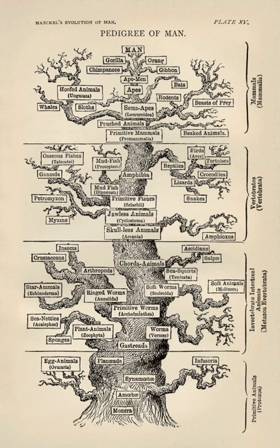A third way is by approach, such as field biology, theoretical biology, experimental evolution, and paleontology. These alternative ways of dividing up the subject can be combined with evolutionary biology to create subfields like evolutionary ecology and evolutionary developmental biology.